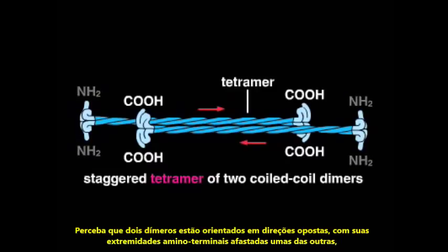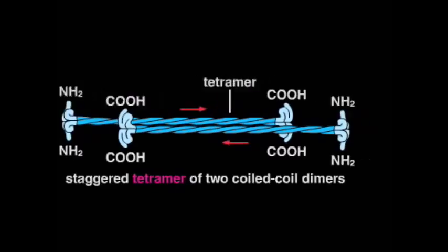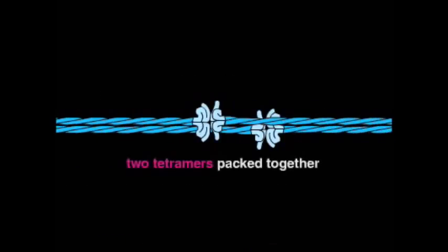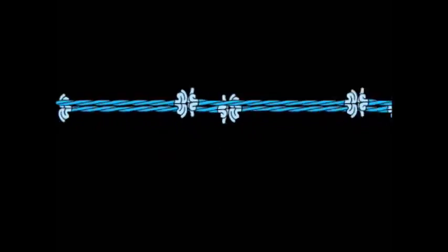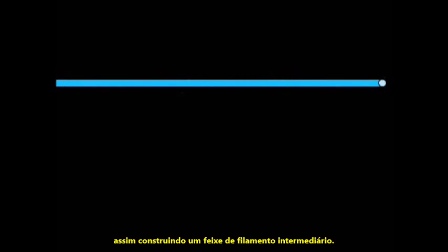The arrangement means the two ends of the tetramer are indistinguishable. Tetramers then link end-to-end, thus building up one strand of an intermediate filament.